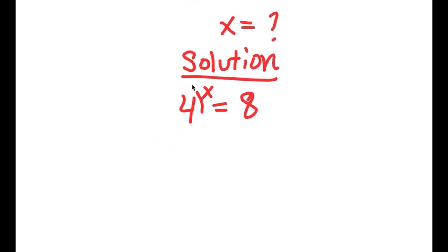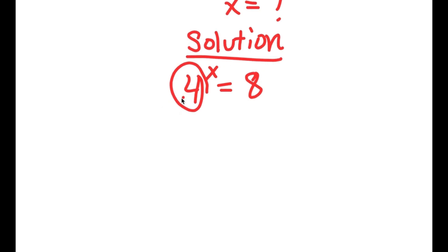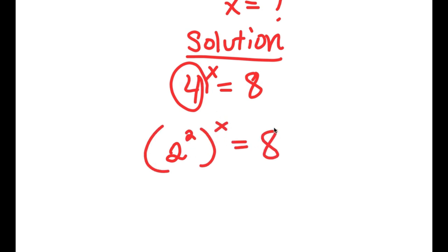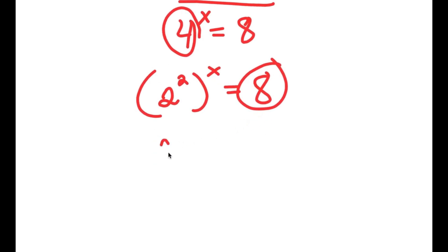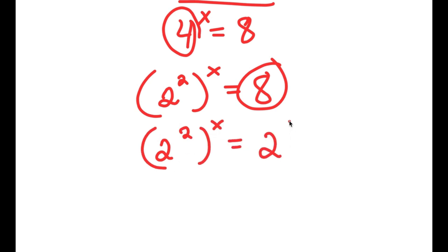Now 4 is the same thing as 2 squared, so I'm going to rewrite this as 2 squared to the power of x. All I did was replace 4 with 2 squared. And 8 is the same thing as 2 to the power of 3, so I'll replace 8 with 2 to the power of 3. So I have 2 squared to the power of x is equal to 2 to the power of 3.